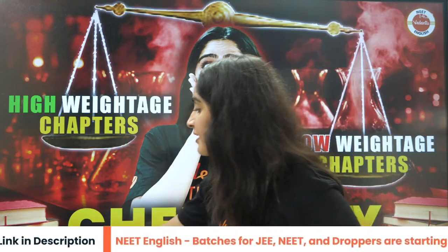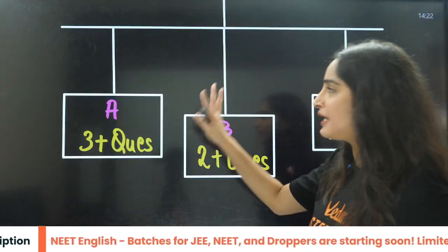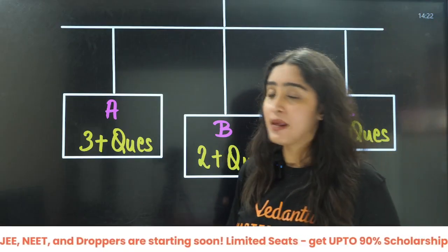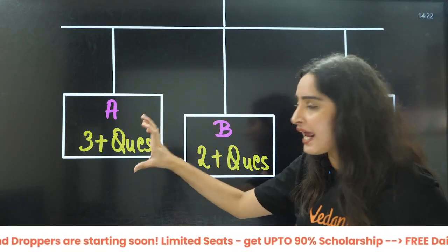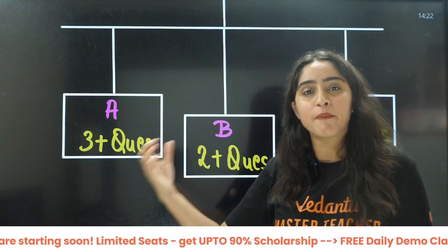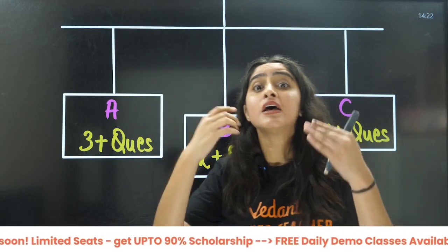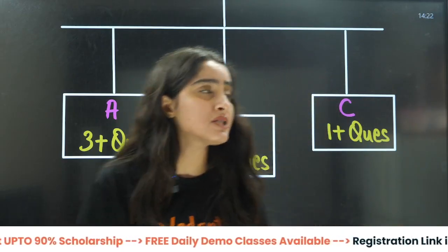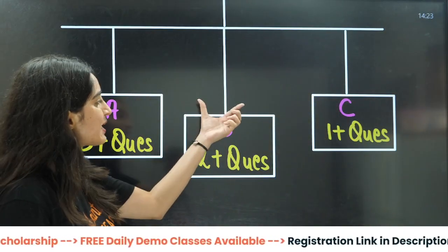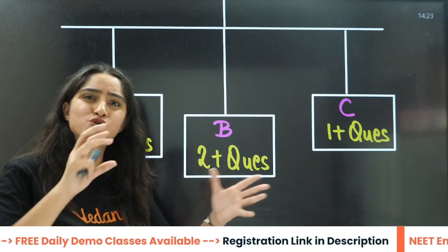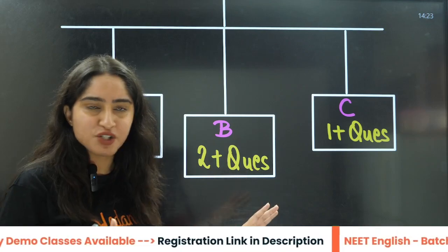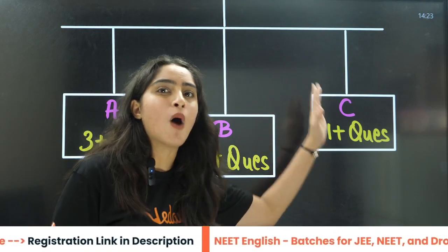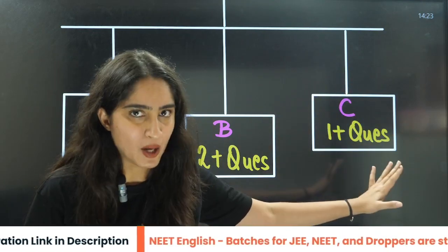I have categorized this into three categories: A, B and C. In category A, we have chapters which have 3 to 4 questions. Category B has 2 to 3 questions. Category C has 1 to 2 questions.